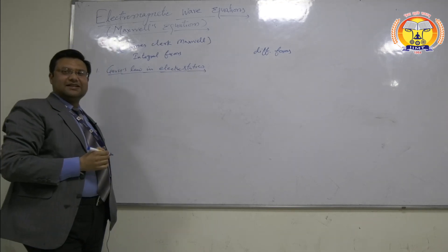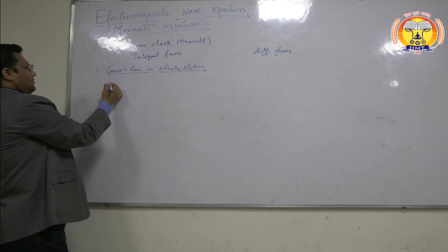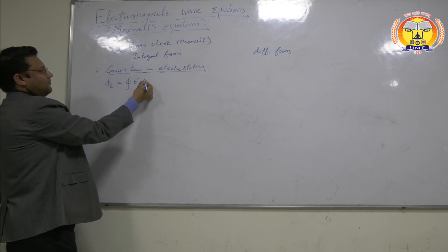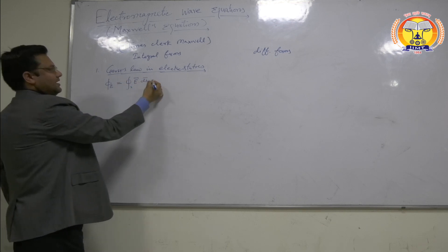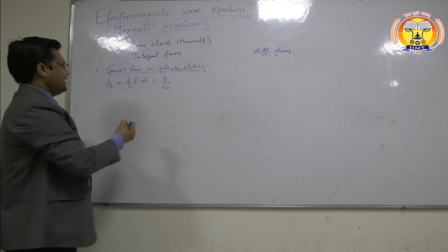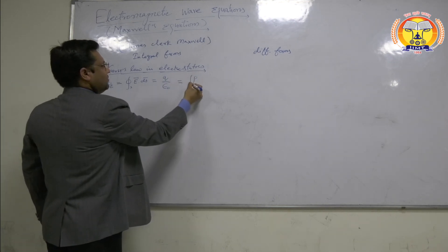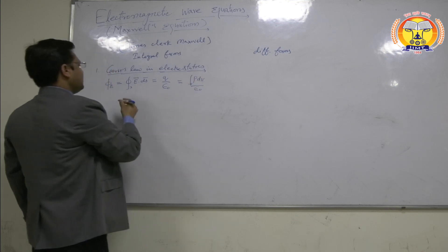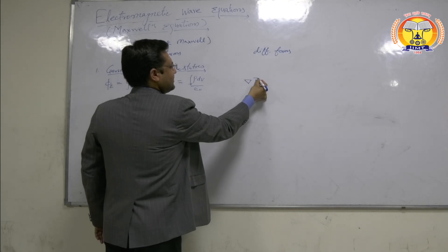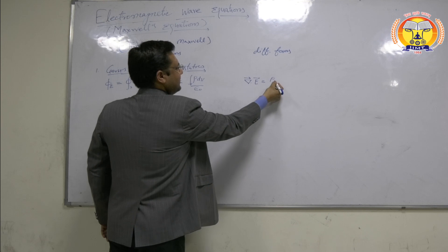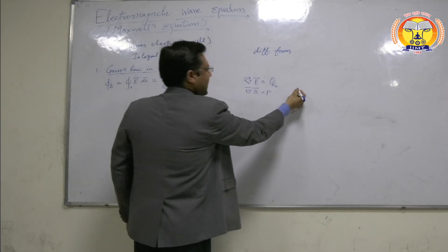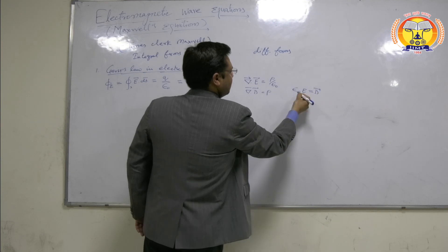Gauss's law states that the electric flux over any closed surface area — that is, the integral of E dot dS over a closed surface — equals one over epsilon naught times the total charge enclosed by that surface. So Q equals rho dV over epsilon naught. In differential form, del dot E equals rho over epsilon naught, and since epsilon naught times E equals D (the displacement vector), we can write del dot D equals rho.